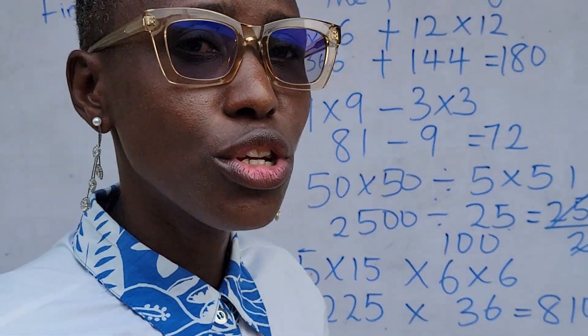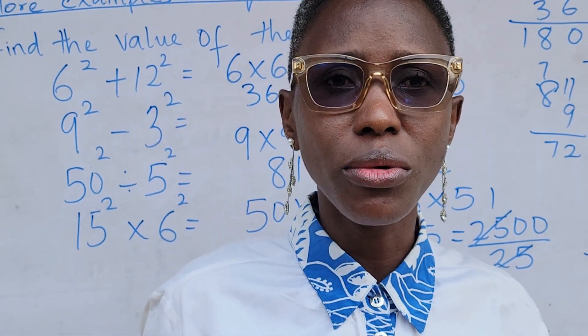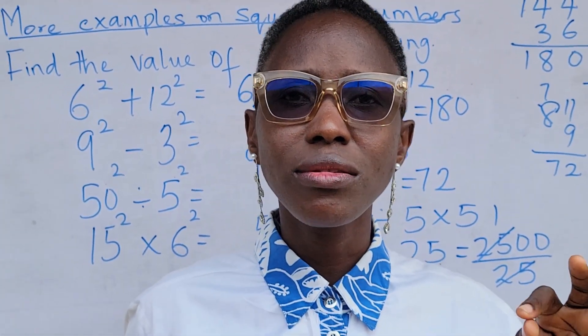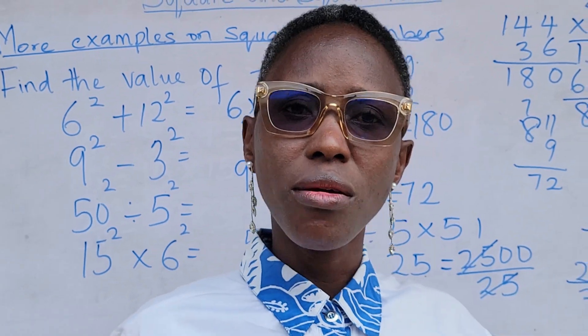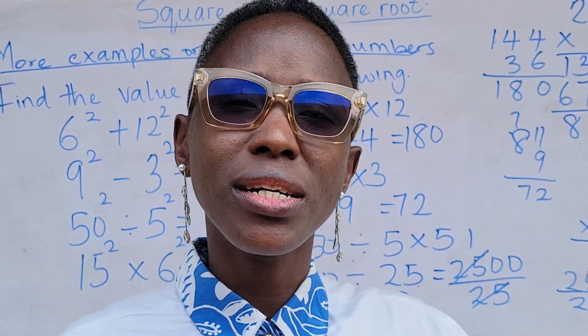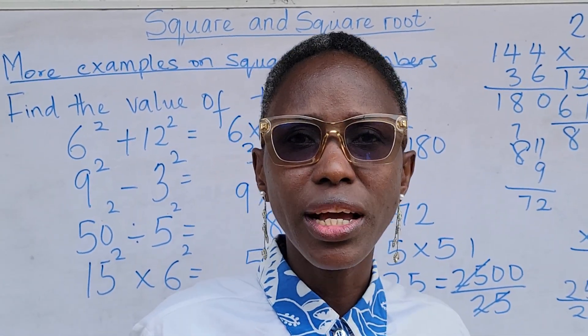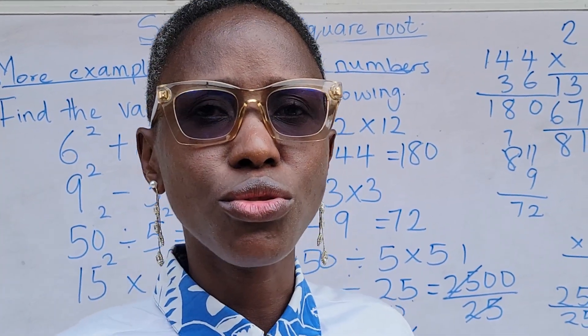The basic thing you need to know about squares of number is whatever number you are asked to find the square, multiply that number by itself. Once you can do that, you'll be good to go.